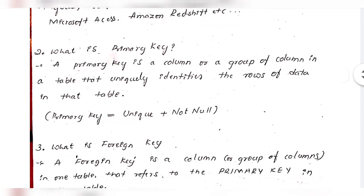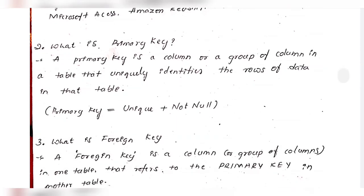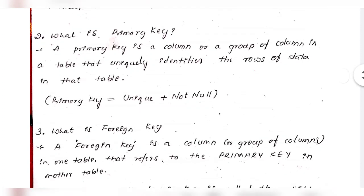Next important question: what is a primary key? A primary key should be unique and not null — it should never be null. A primary key is a column or a group of columns in a table that uniquely identifies each row of data in that table.